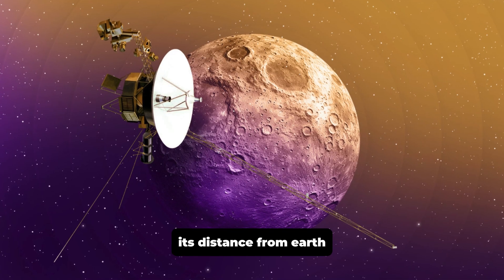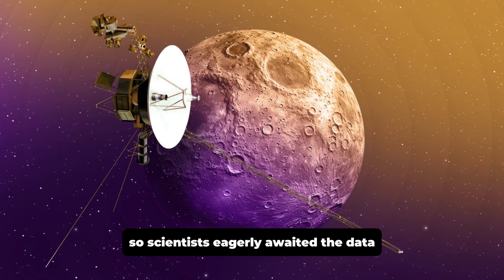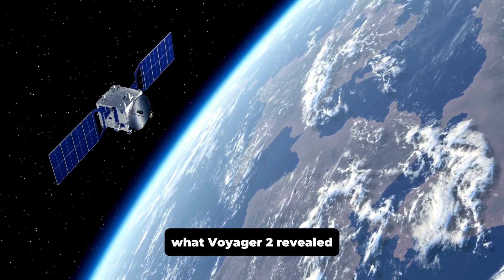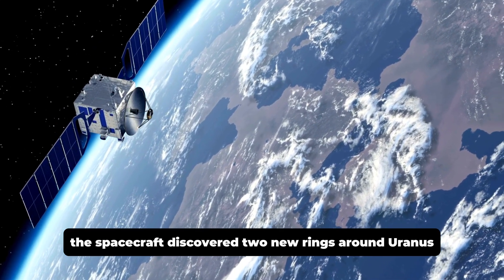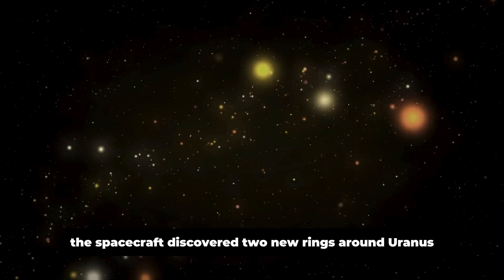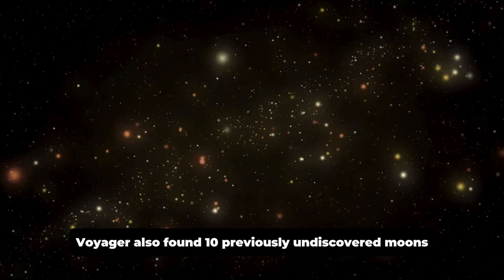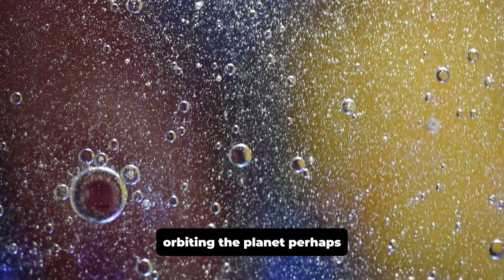Its distance from Earth made it difficult to study with Earth-based telescopes, so scientists eagerly awaited the data that Voyager 2 would provide. What Voyager 2 revealed was nothing short of astonishing. The spacecraft discovered two new rings around Uranus, bringing the total number of known rings to 11. Voyager also found 10 previously undiscovered moons orbiting the planet.